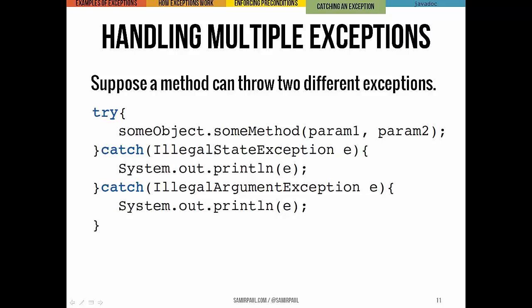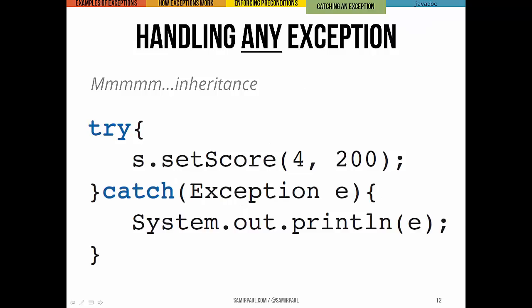The computer's just going to run down the list of catch clauses until we find a match for the particular exception type that we have. If no match is found, then the exception gets passed up the call chain just as we talked about before. If you want to guarantee that your exception is going to get caught, you can use the highest level in the hierarchy — this generic Exception class, which handles any exception type. So it doesn't matter what setScore throws; they're all subclasses of Exception, and therefore we'll print it out no matter what.